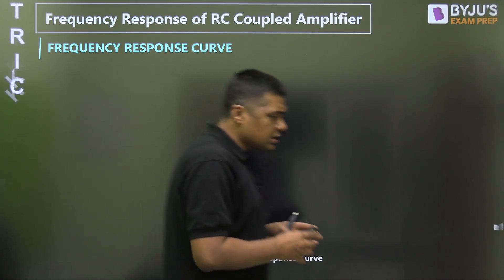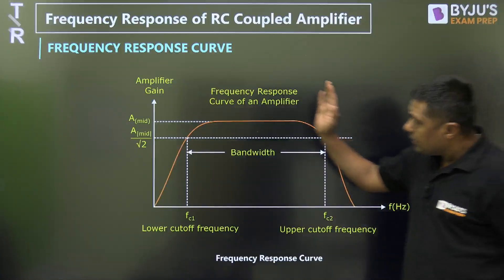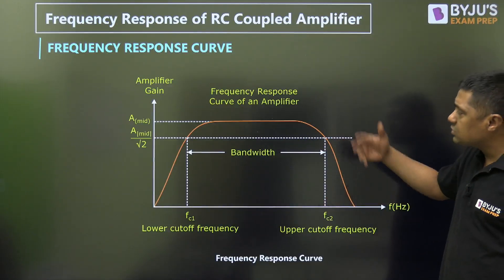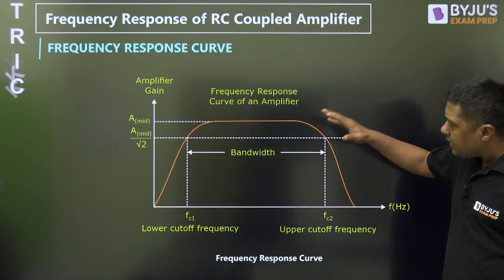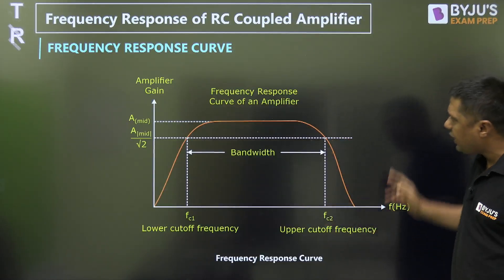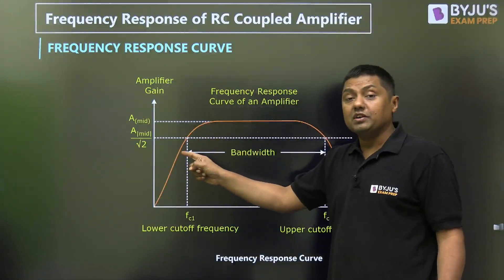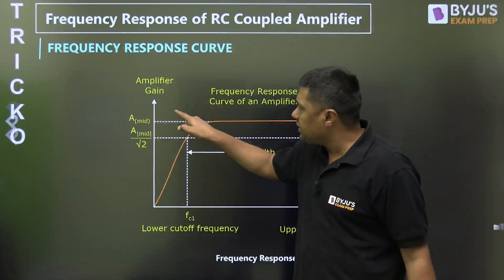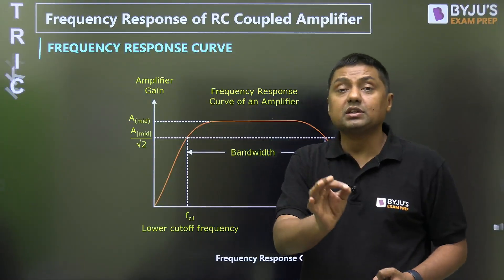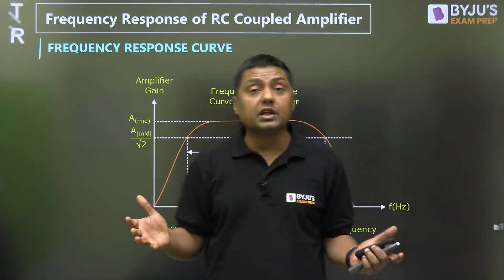The frequency response of the RC coupled amplifier is just like a bandpass filter. In the mid-frequency range, the gain is almost independent of frequency, which is why we do analysis at mid frequency. At high frequency it behaves like a low-pass filter; at low frequency it behaves like a high-pass filter. The gain falls at low frequency due to coupling capacitors CC1, CC2 and bypass capacitor C, and at high frequency due to internal junction capacitances.